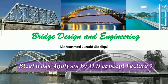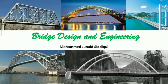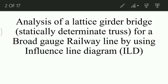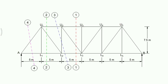Good morning students, I am Mohamed Junesh Shiddiqui. Welcome to the bridge design and engineering subject. This is the third lecture of steel truss analysis by using ILD — analysis of a lattice girder bridge for a broad gauge railway line. In the previous two lectures, we analyzed the members crossing section 1-1 and section 2-2. Now in this lecture, the remaining members crossing section 3-3 and section 4-4 will be analyzed.